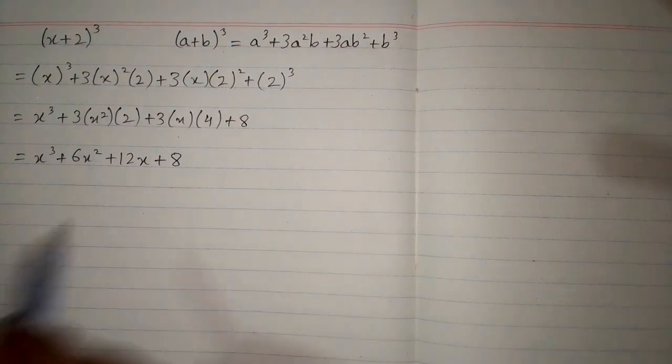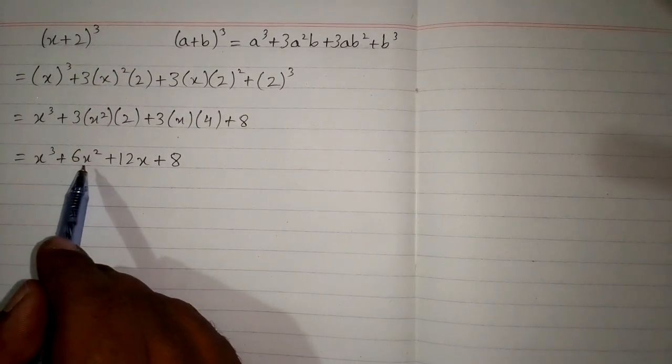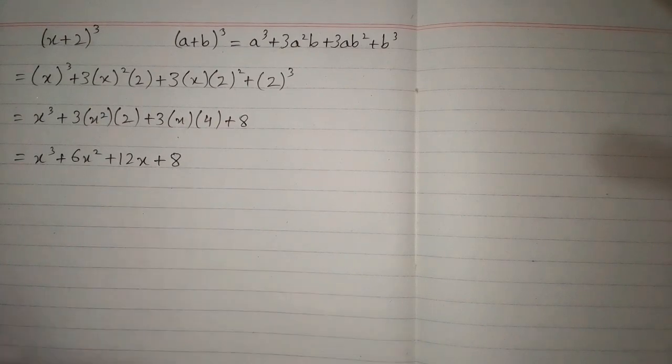So (x+2)³ is equal to x³ + 6x² + 12x + 8. Thank you.